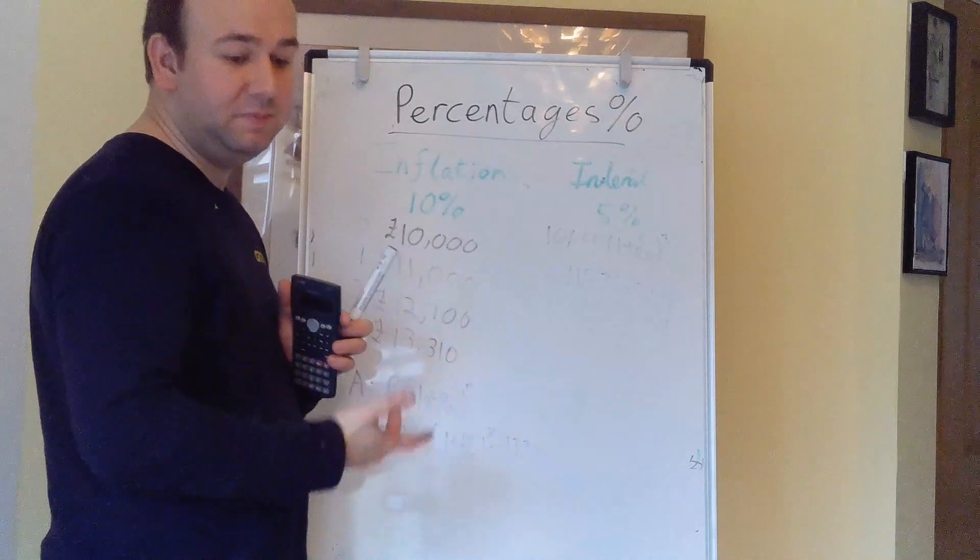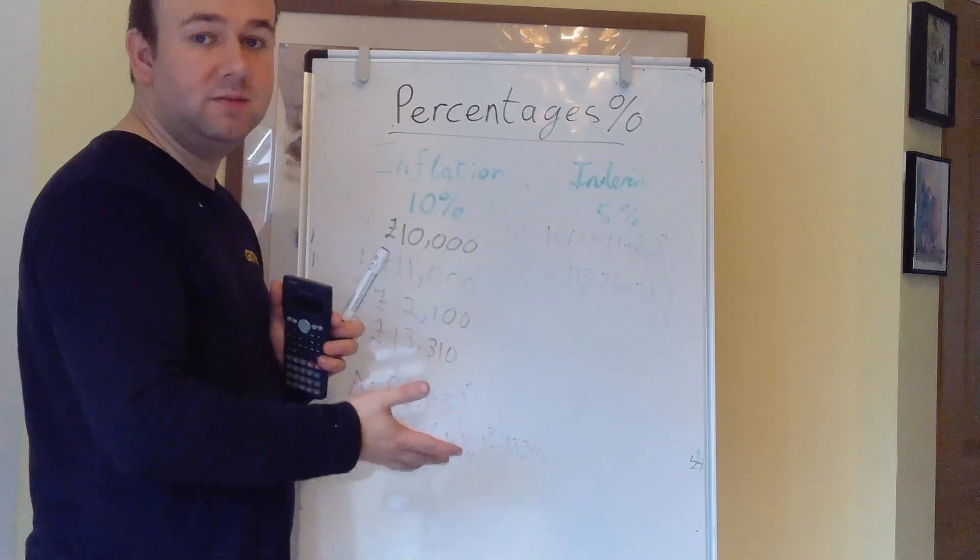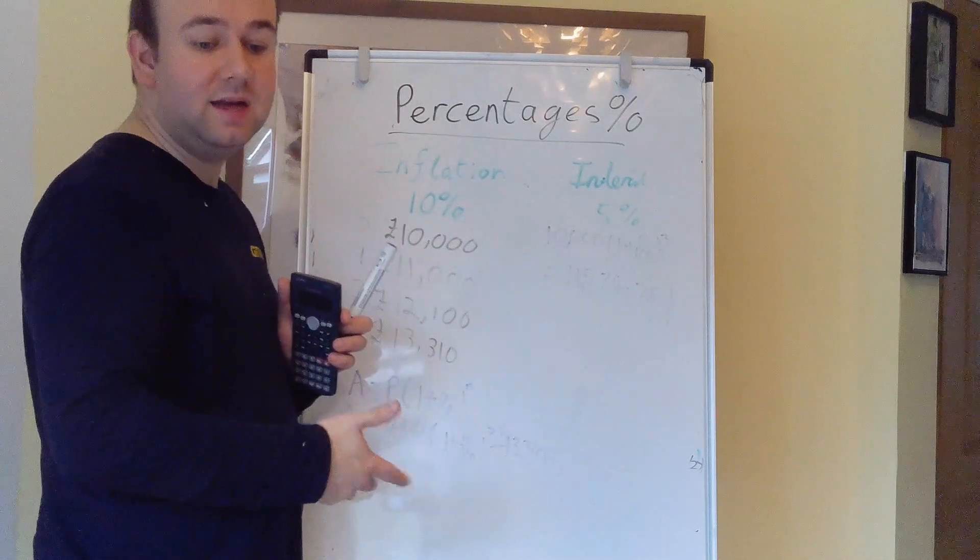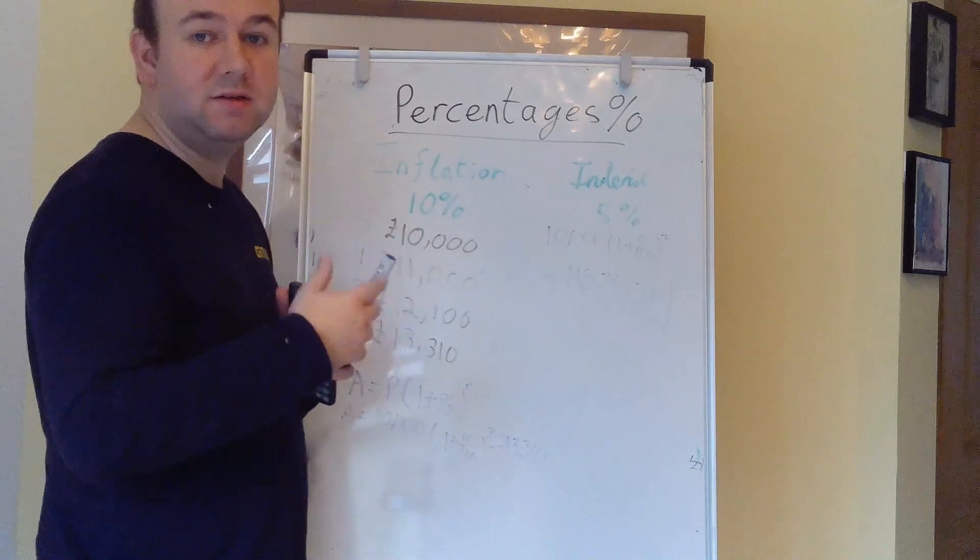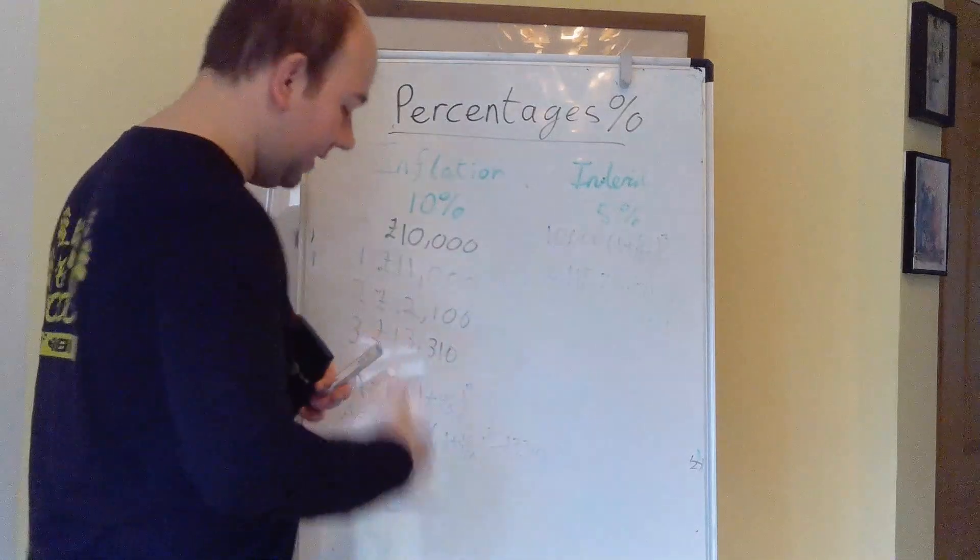So you actually have less purchasing power. If you think about it as being able to buy goods, say your Mars bar, how many Mars bars could you buy several years ago for your amount of money you had then, or you were getting paid then, compared to the amount of Mars bars you can have now. So it's a very important thing to be able to understand this.